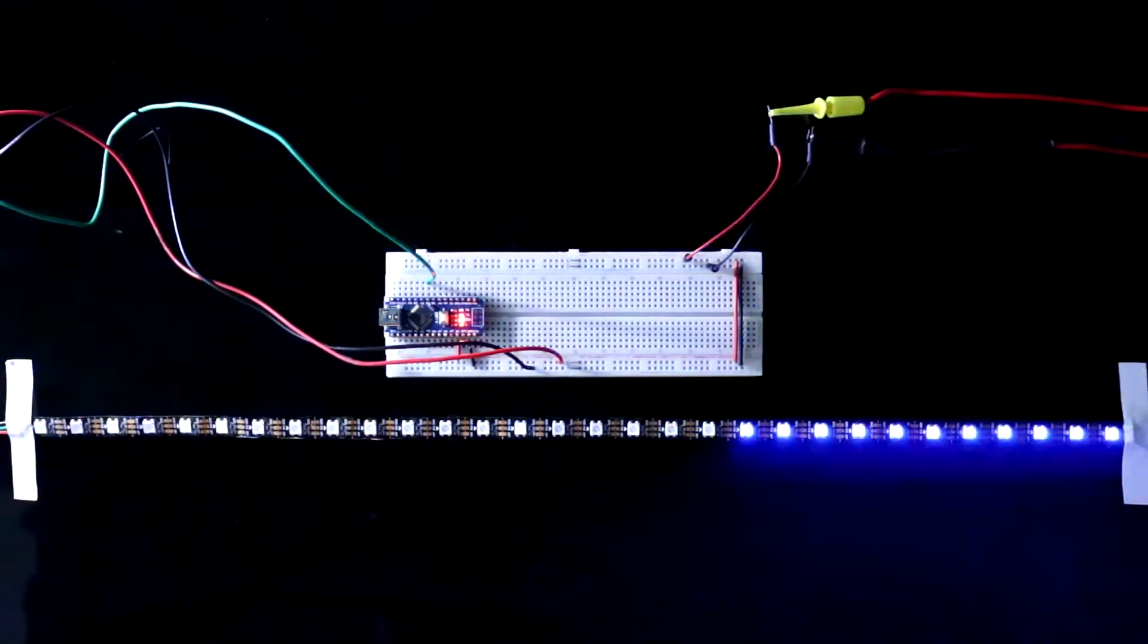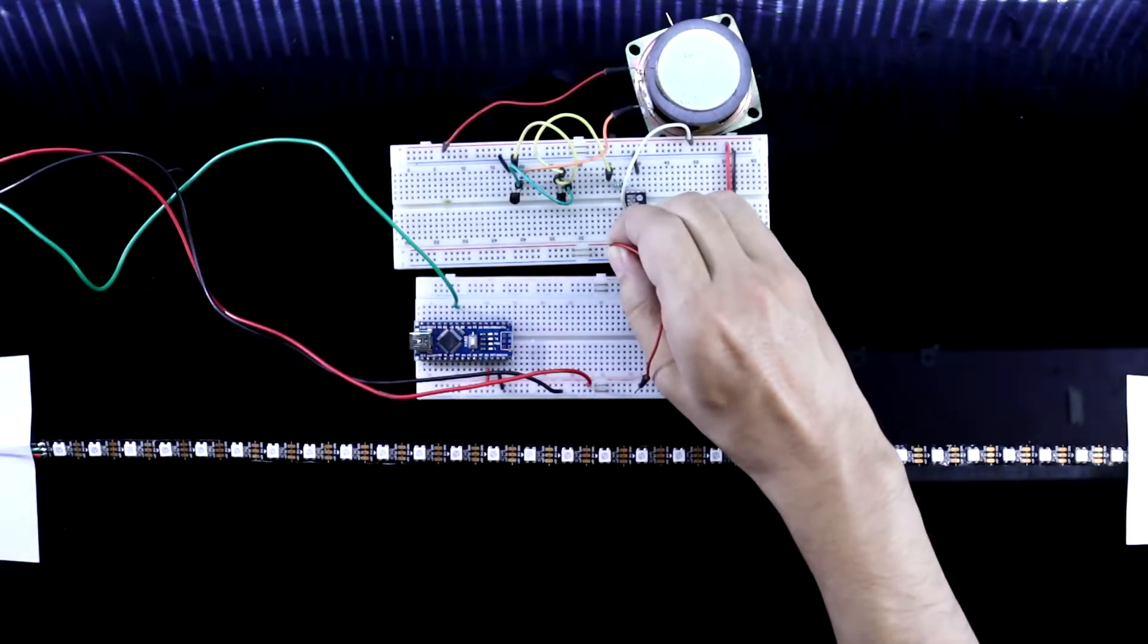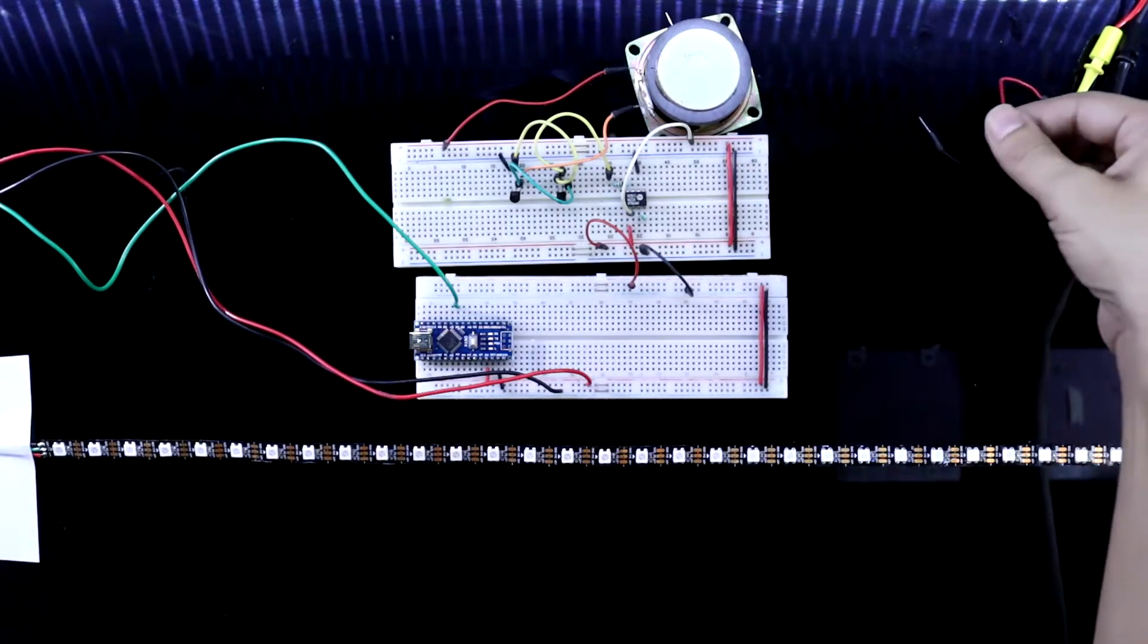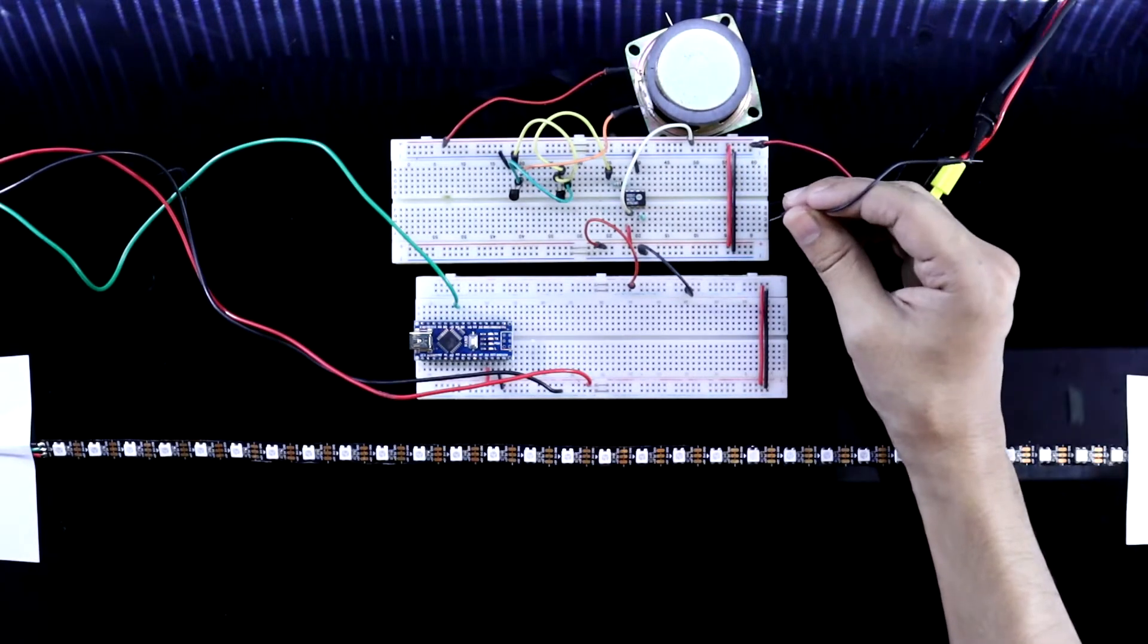Now here is the circuit. Here it is positive to positive and negative to negative. Connecting 5 volt power supply. Here it is positive and the negative.